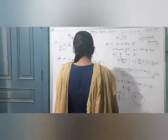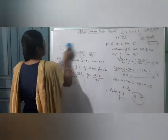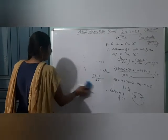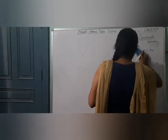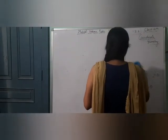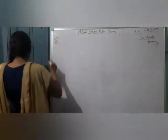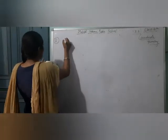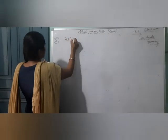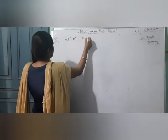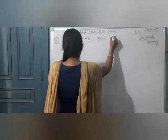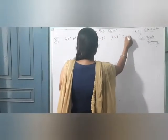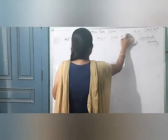Moving on to Question 2: Find a relation between x and y if the points (x, y), (1, 2), and (7, 0) are collinear.